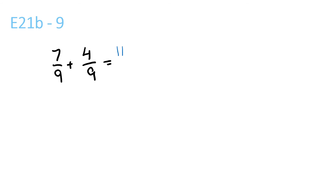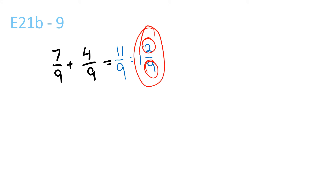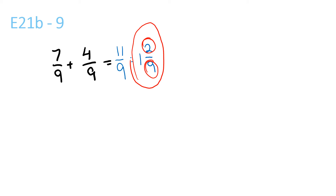Next question. 7 plus 4 is 11. The 9 stays the same at the bottom. That equals 9 goes into 11 once with a remainder of 2 over 9. Now, since there is no number that both of these can possibly go into — and we're talking about whole numbers here — then that is your answer. Because no number that goes into 2 can also go into 9. 2 can go into 2 easy, but it can't go into 9. 3 can go into 9, but it can't go into 2. So there is no possible simplification. Your answer is 1 and 2 over 9.